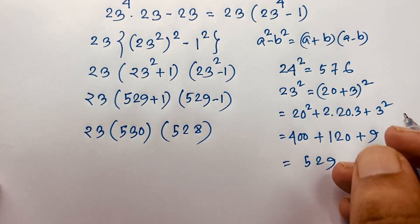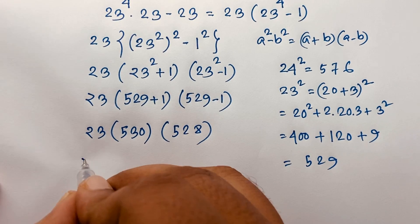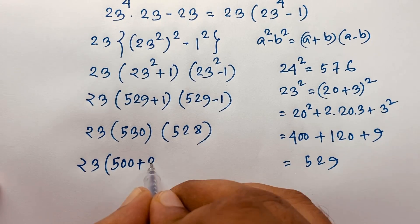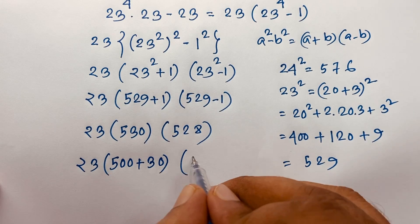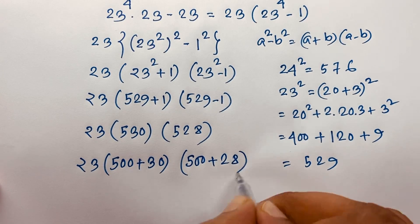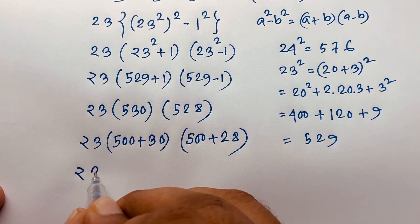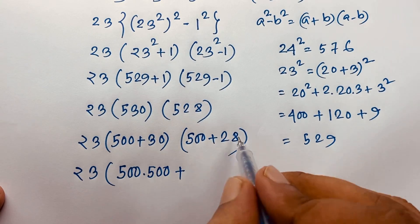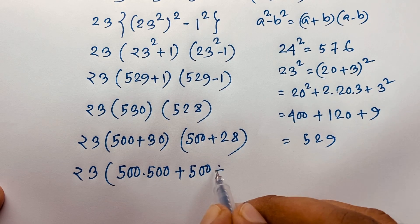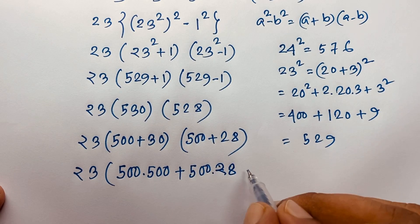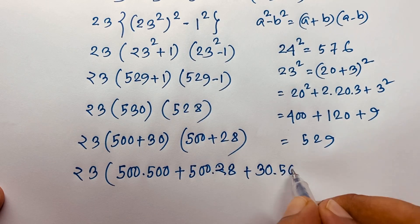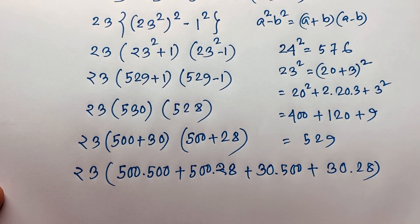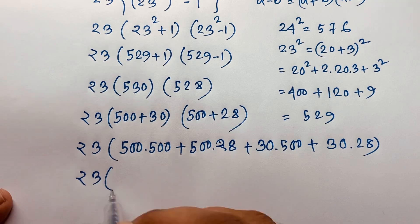Now how to evaluate 530 times 528 without a calculator? I use an easy method. I write 528 as 500 plus 28, so 530 times 528 equals 530 times 500 plus 530 times 28.